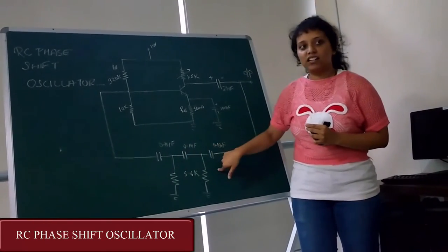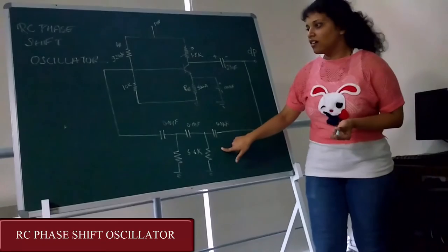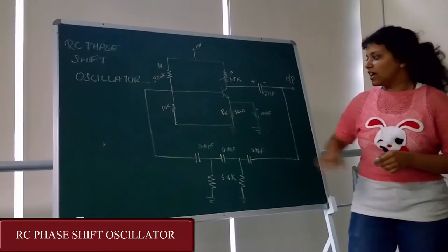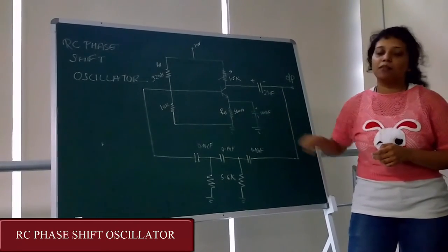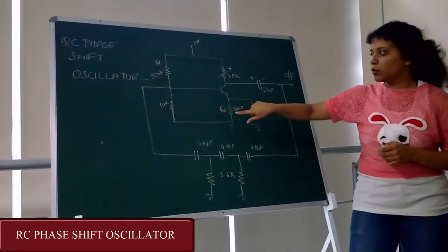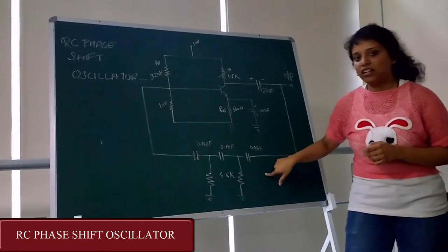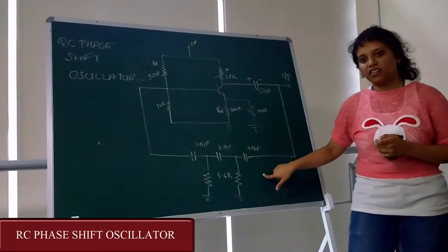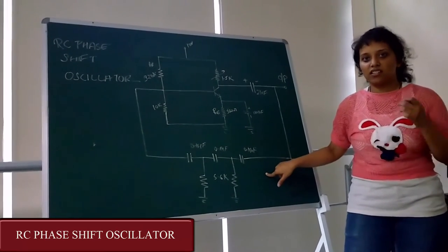So total it gives 180 degree phase shift. We know that in common emitter configuration BJT gives 180 degree phase shift. As a result we get total that is 180 and here 180, that is 360 degree phase shift. So we just get the sine wave.